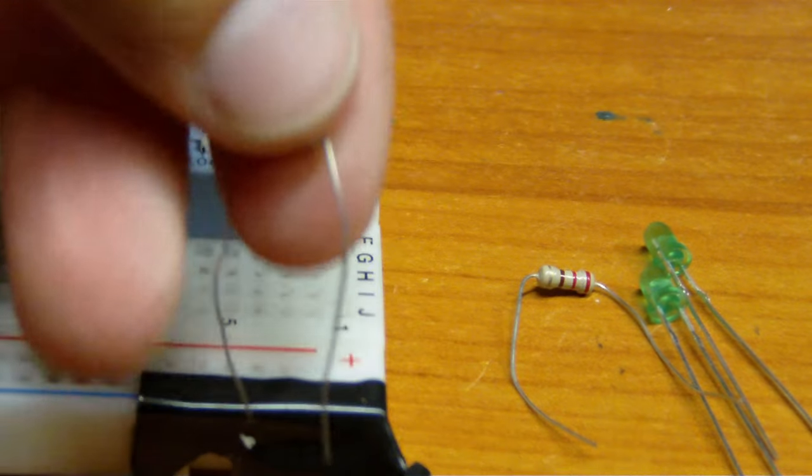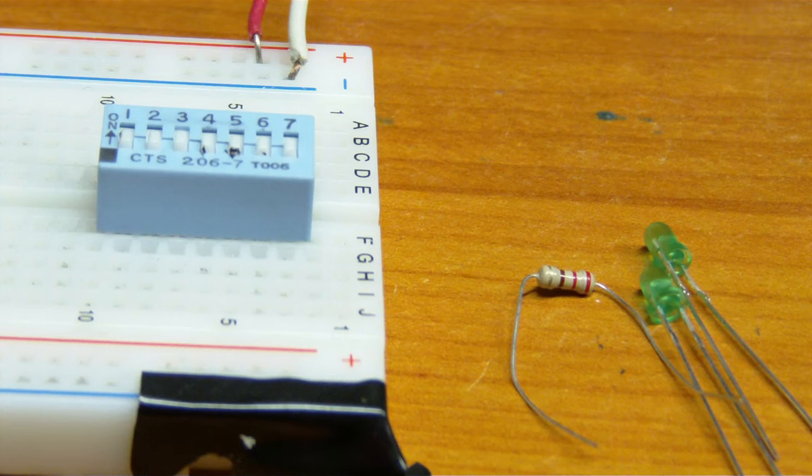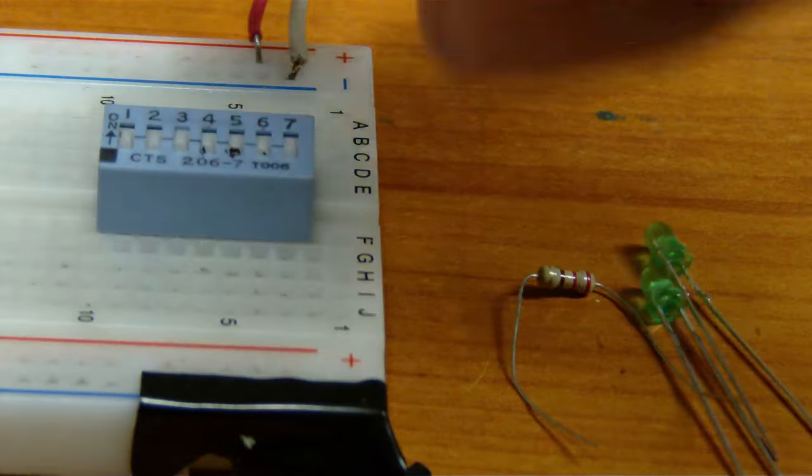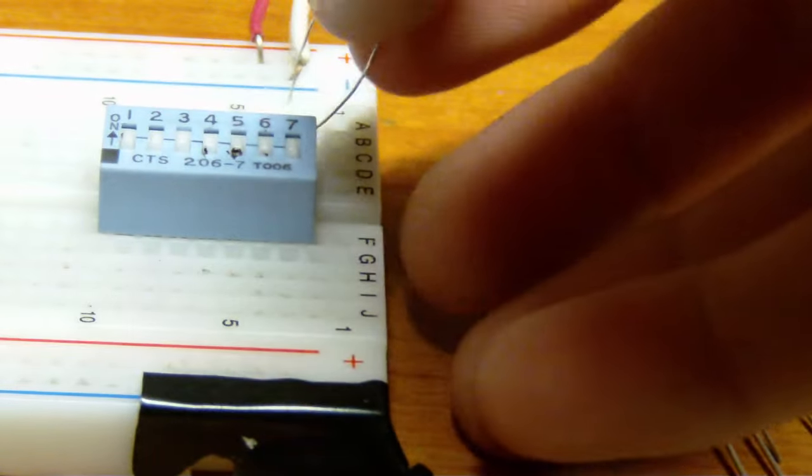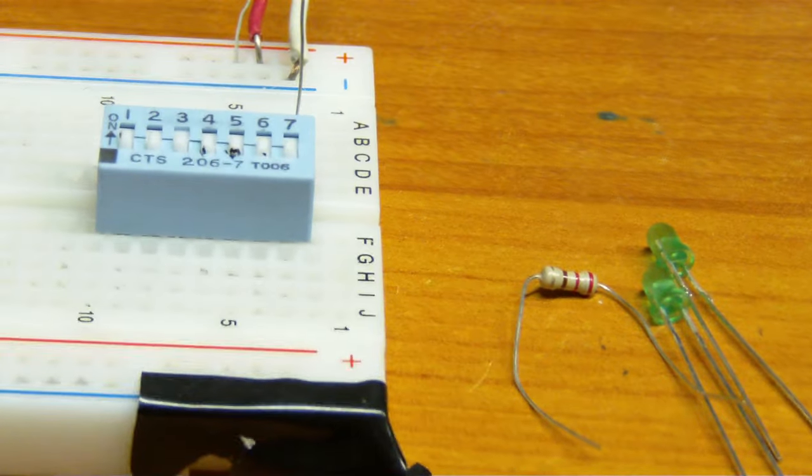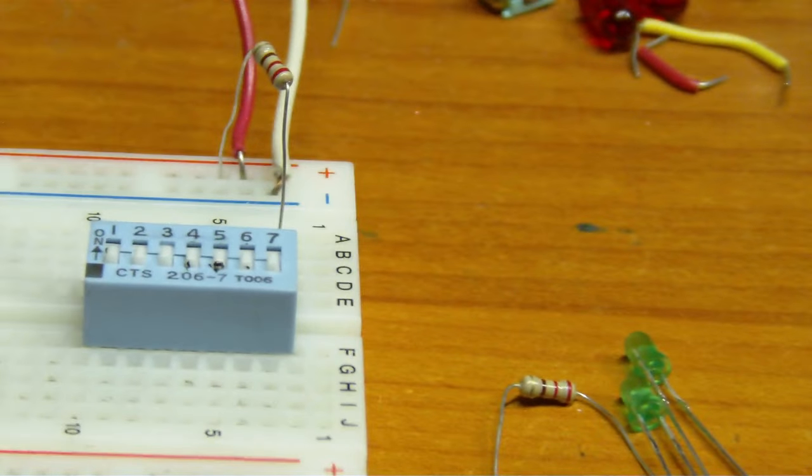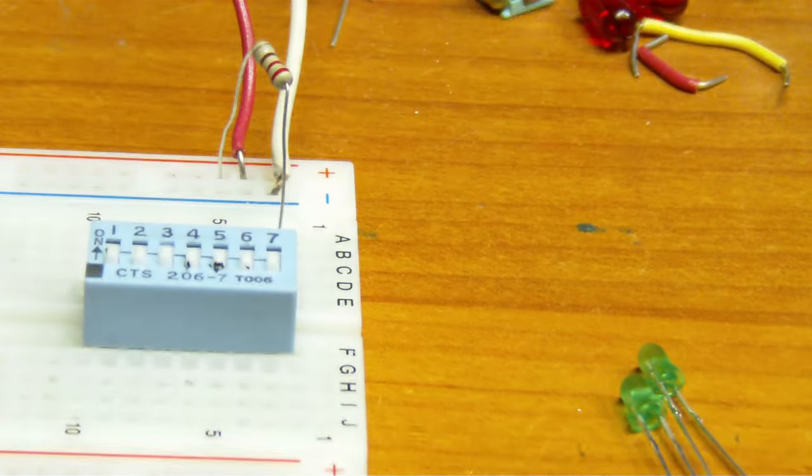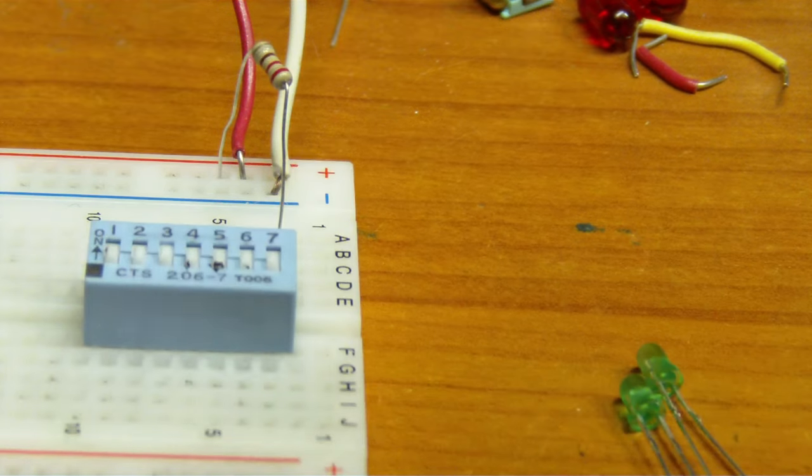The next thing you want to do is put your 220 ohm resistor on, let's say we'll do this on seven. Put it on seven, and put it in the positive terminal, like so. And then do the same for this one. Sorry, I can't really get the other side. Let's do this one for six.